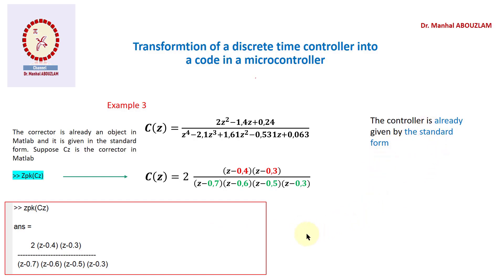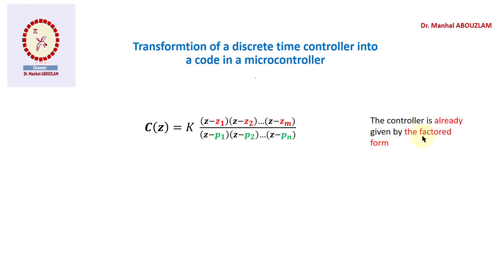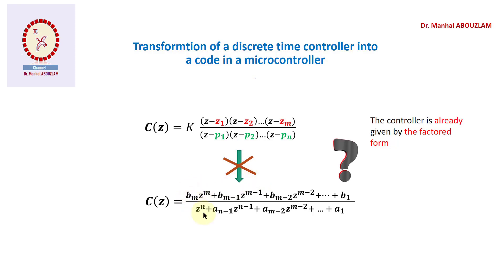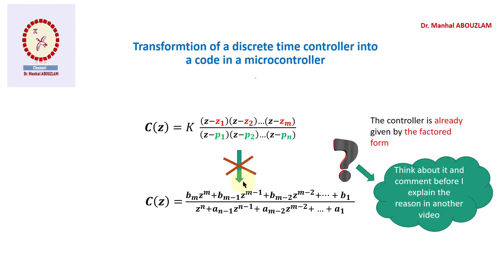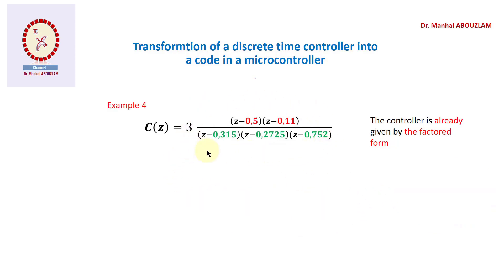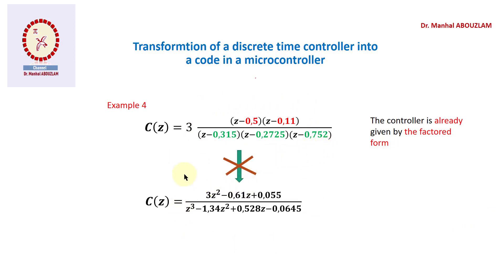Until now we have dealt with the case where the controller is given in standard form and shown how to find the factored form. Now suppose the controller is already given in the factored form — that's very good. The question is: why is it not good to consider the standard form, and in particular if we already have the factored form, why is it not good to switch to the standard form? I will make a separate video to show mathematically why it's not good. We must always consider the factored form for application in a microcontroller.